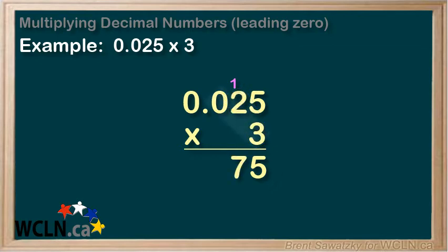Next, 3 times 0, well that just equals 0. And we can see that this calculation wasn't really needed, as adding a zero here is meaningless. So we know we can stop there.